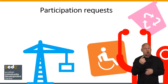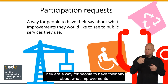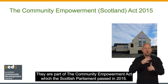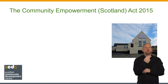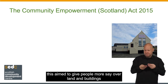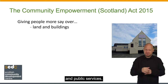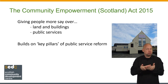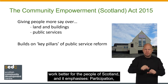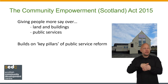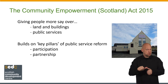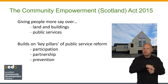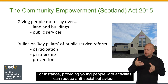Participation requests are one way to participate. They are a way for people to have their say about what improvements they would like to see to public services they use. They are part of the Community Empowerment Act, which the Scottish Parliament passed in 2015. Among other things, this aimed to give people more say over land and buildings and public services. The Community Empowerment Act is one development in public service reform which has been happening over the last decade in Scotland. Public service reform aims to make public services work better for the people of Scotland, and it emphasises participation, partnership or working better together, and prevention — which is about making public services more effective at stopping problems from happening in the first place. For instance, providing young people with activities can reduce anti-social behaviour.